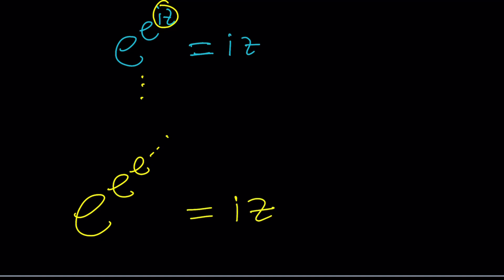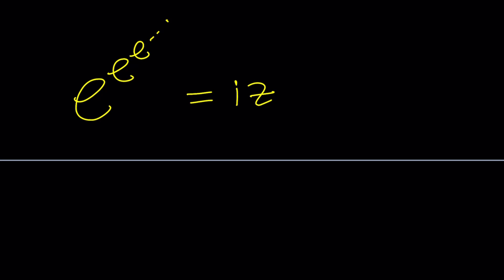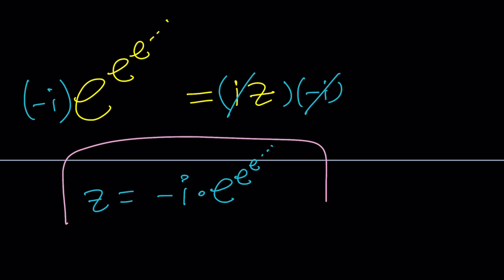Wow, that was simple. And then maybe we can multiply by negative i. And if you do that, you're going to get 1. And z is going to be negative i times e to the power, e to the power, e dot dot dot. Well, wait a minute. Doesn't this diverge? I don't know. It doesn't matter. It's just a fun way of writing it. And if you think it's incorrect, let us know in the comment section.